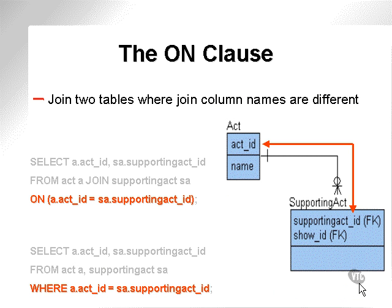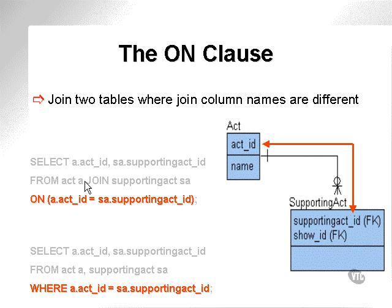Here is a description of the ON clause. You use the ON clause when joining two tables where the join column names are different. Originally, if this was called act ID, I would not need to worry about the ON clause. Since they are different, when I do a join between the act and the supporting act tables — since they are actually the same fields — I would have to specify using the ON clause that these two fields get matched together. Without this ON clause, the ANSI join statement will not be able to match the two fields at all. This is the Oracle equivalent of this ANSI join format statement, where we simply have a WHERE clause.